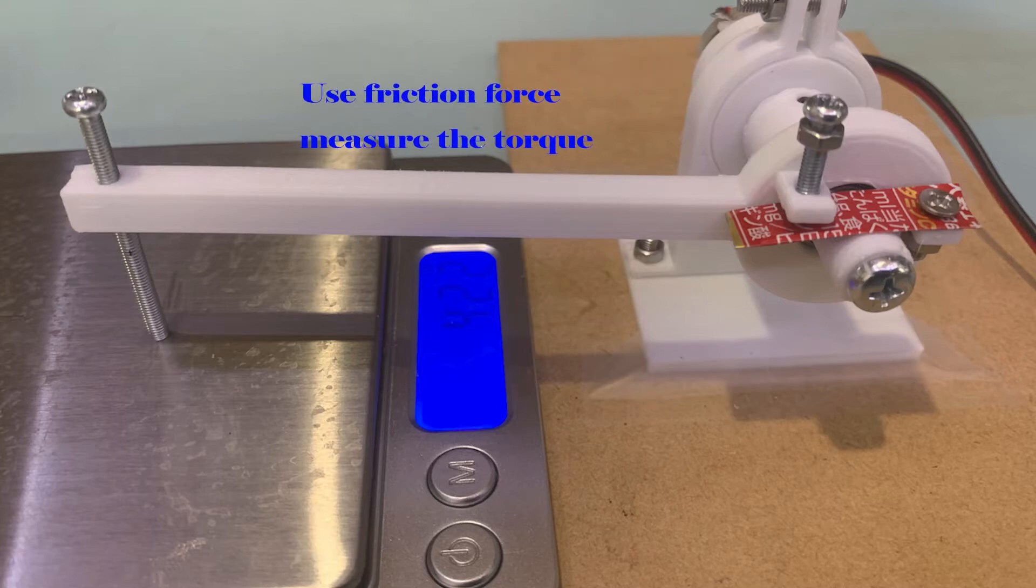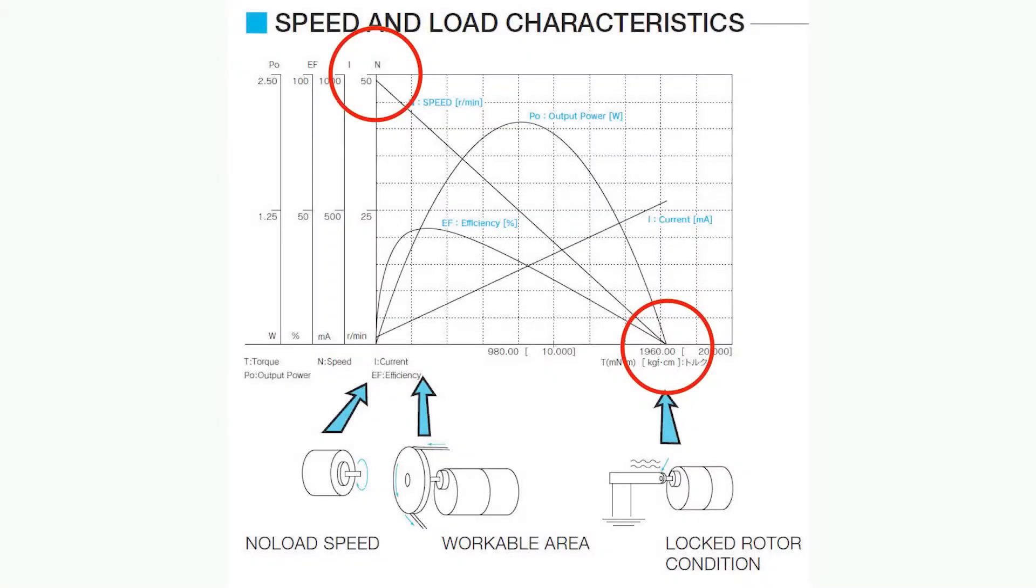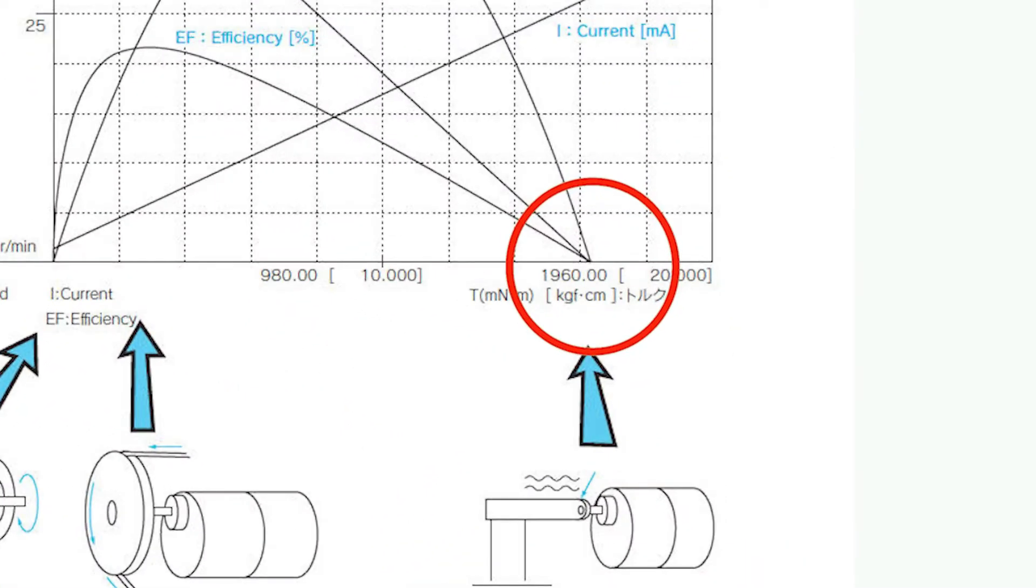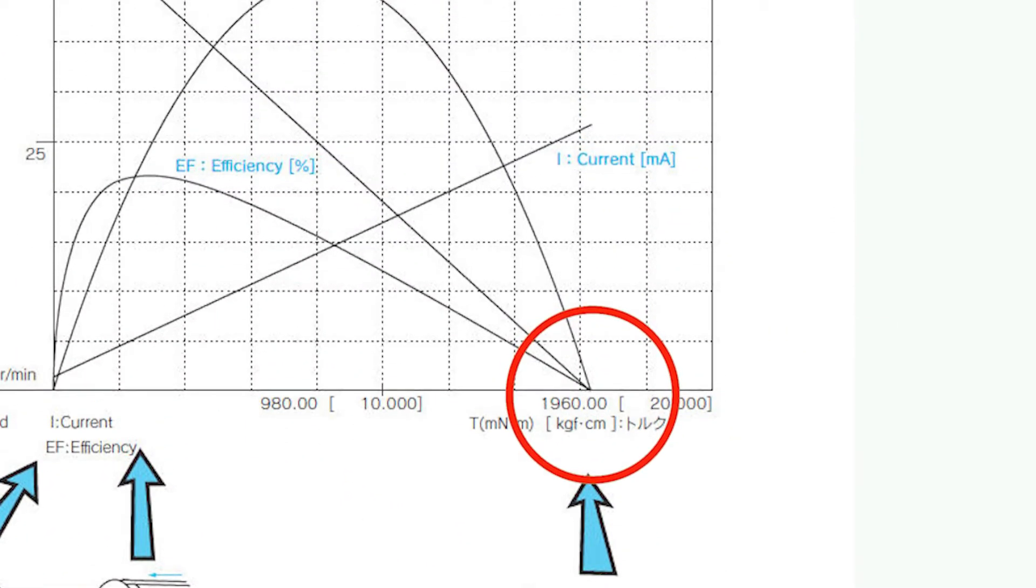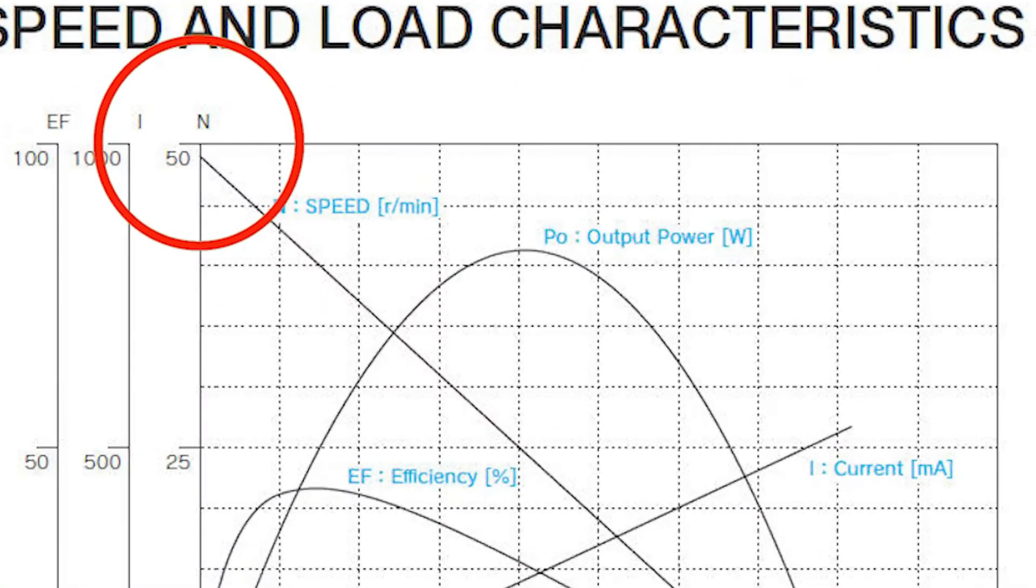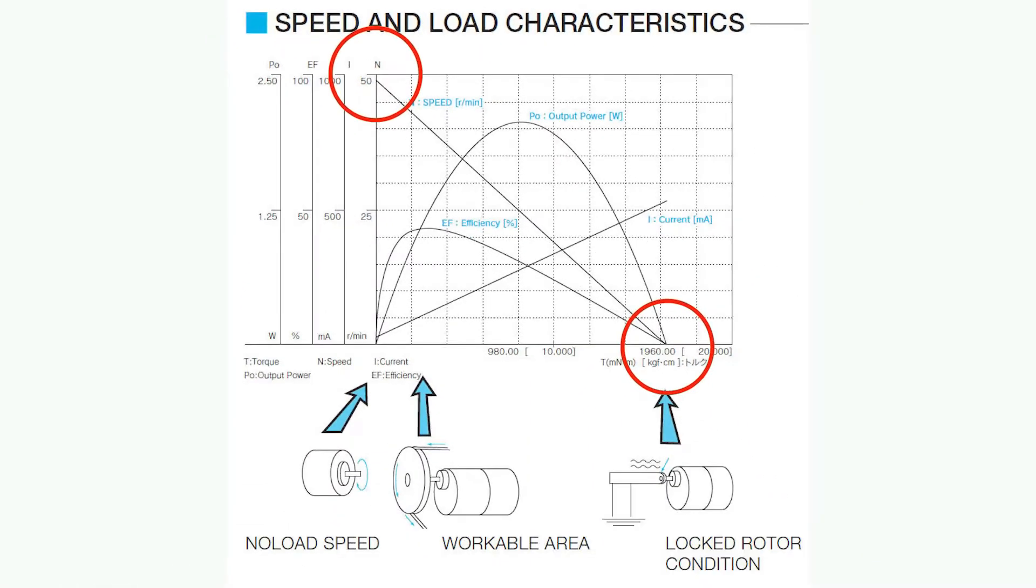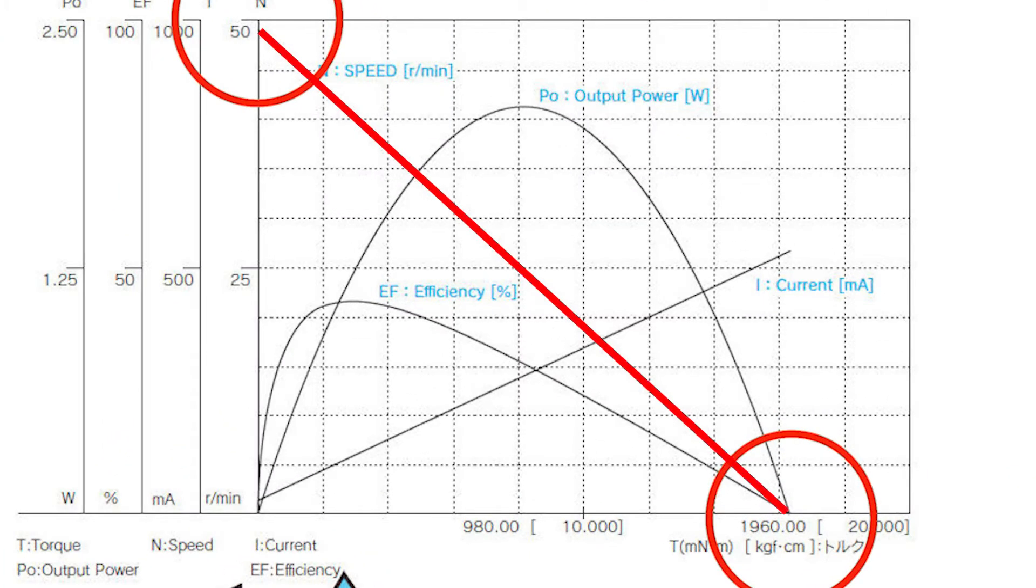Use the friction force to measure the torque. If the motor does not rotate, the torque is called stall torque and the current is called stall current. If the motor rotates freely without a load, the speed is called no-load speed.